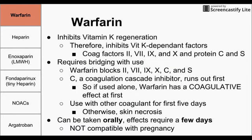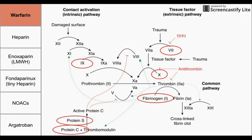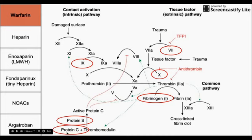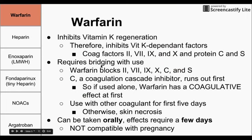Warfarin also requires bridging to use. Of the coagulation factors it blocks, protein C is the one that runs out first. It has a short half-life and a short concentration in the plasma, which combined make protein C run out first. If protein C runs out, as shown in this schematic, it has an inhibitory effect on the coagulation cascade. If protein C runs out, we lose an anticoagulant protein, meaning we get an increased coagulative effect. This is why warfarin paradoxically has a coagulative effect at first.